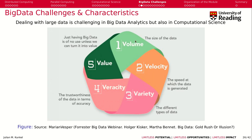The first V is volume, which is the amount of data. The second V is velocity, the speed at which data is generated. The third is variety — having different types of data. We also have veracity, which is the trustworthiness of the data. Finally, we have value, which means data generates value and our data has a flow value.